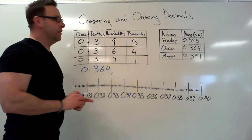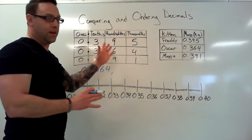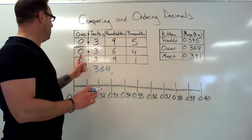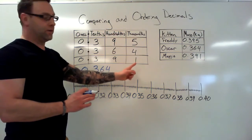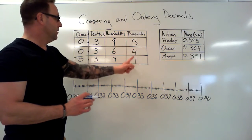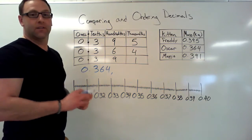Okay, now the other ones we're not sure yet because they're still the same. Zero point three nine five, zero point three nine one. Five is bigger than one, so we know that zero point three nine one is our second smallest.